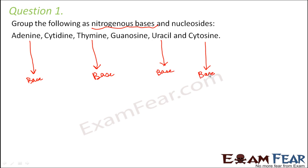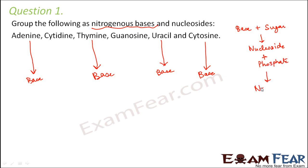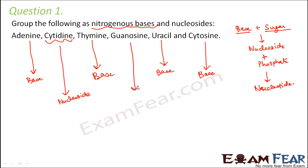Now what is a nucleoside? A nucleotide has three components: the pentose sugar, the phosphate group, and the nitrogenous base. When the base and sugar combine together they form a nucleoside, and when the phosphate group combines with the nucleoside it forms the nucleotide. So cytidine is a combination of cytosine and the pentose sugar — that is a nucleoside. Guanosine is a combination of guanine and the pentose sugar, so that is also a nucleoside.